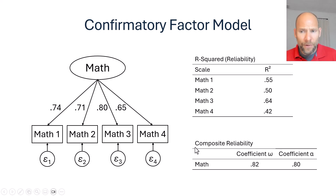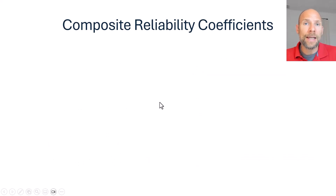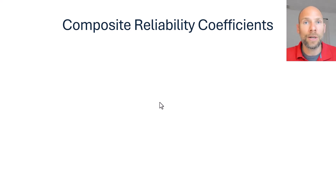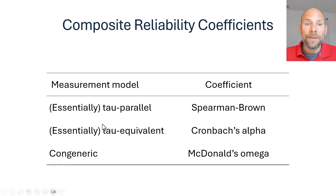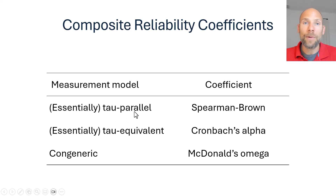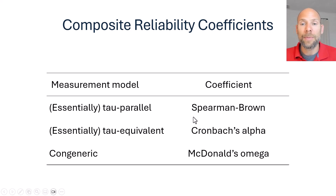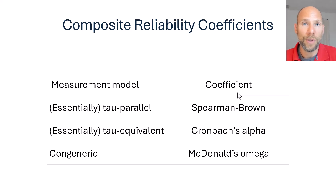Why are there different composite reliability indices? The reason is that classical test theory has different types of measurement models. The congeneric measurement model with different factor loadings is the most general. More restrictive models also exist, and different composite reliability coefficients are used for each. The most restrictive are the essentially and strictly parallel measurement models, which have equal loadings and equal error variances — for these, a simpler formula applies: the Spearman-Brown formula for composite reliability.